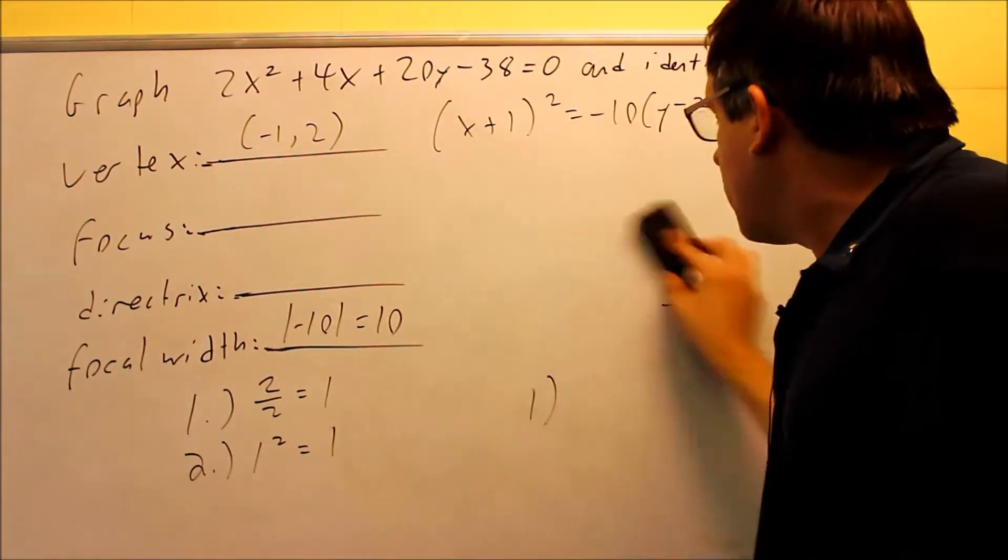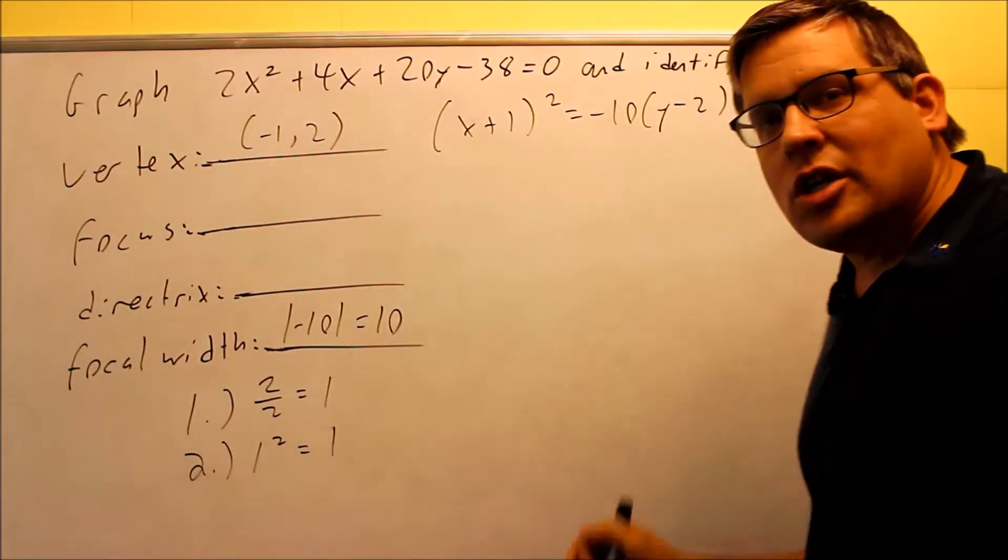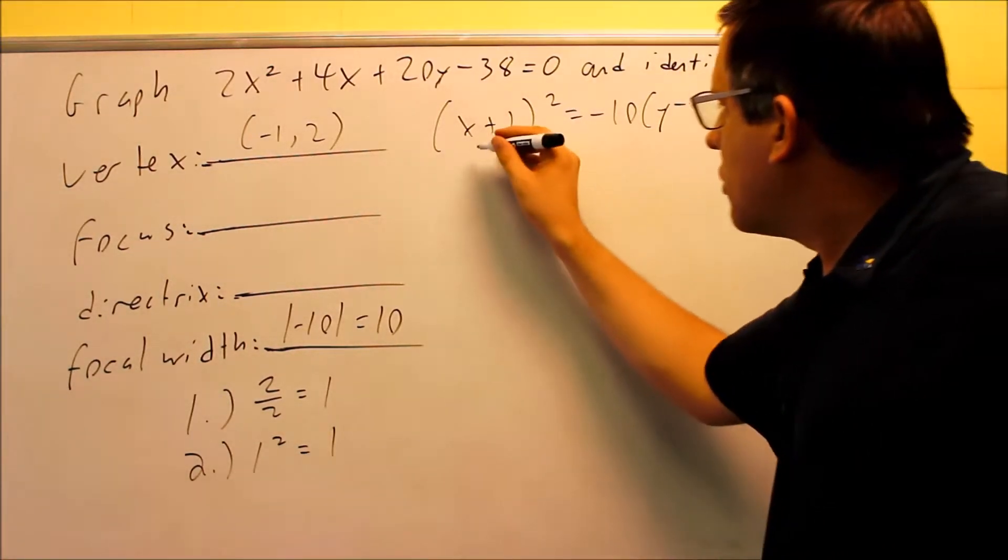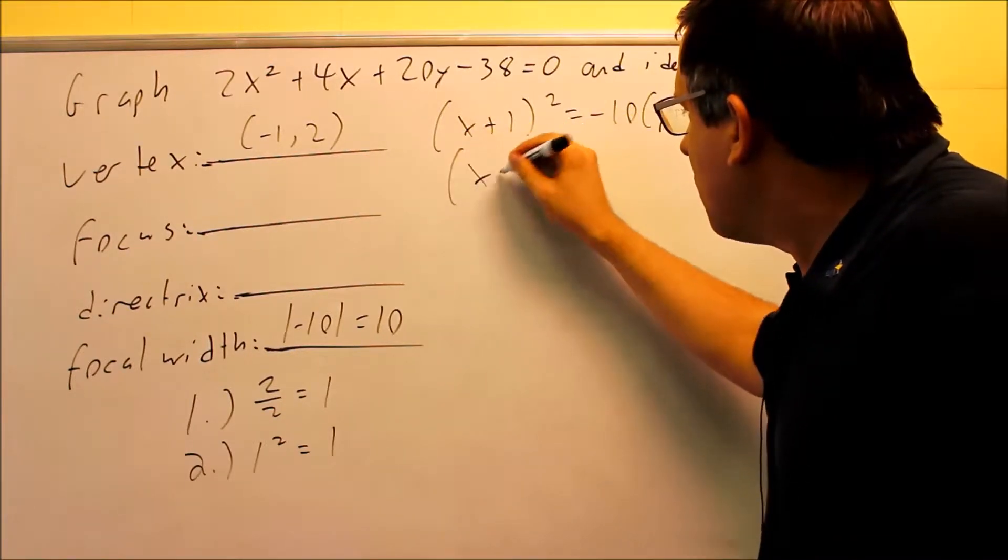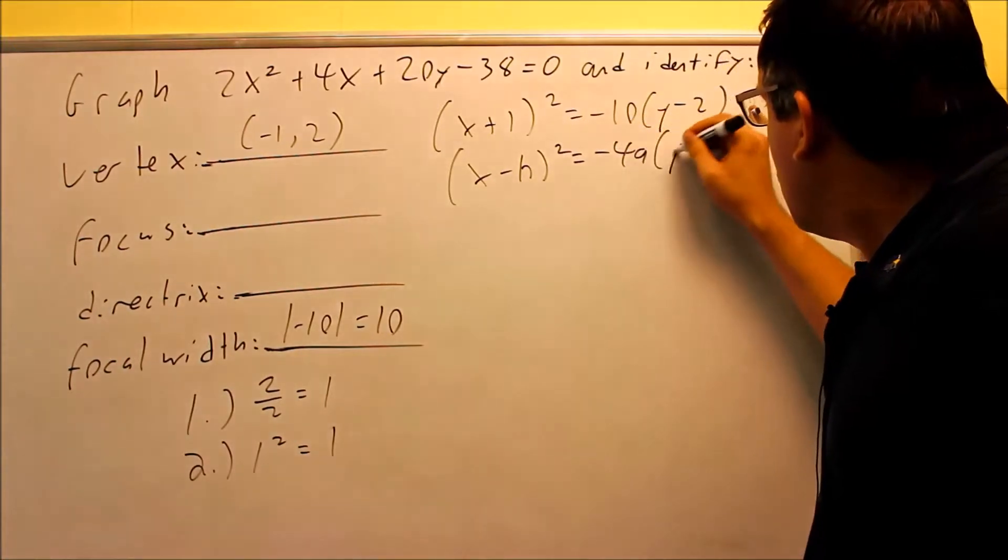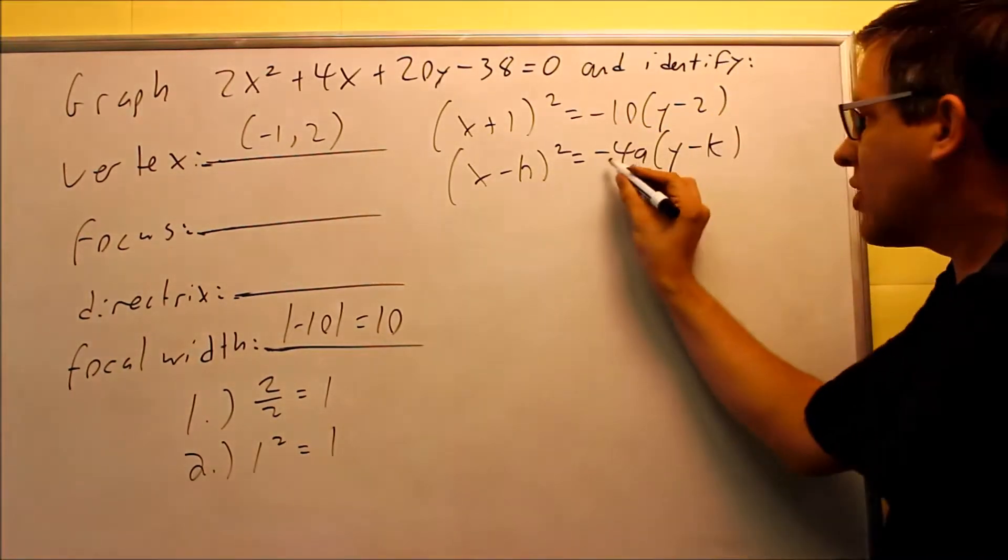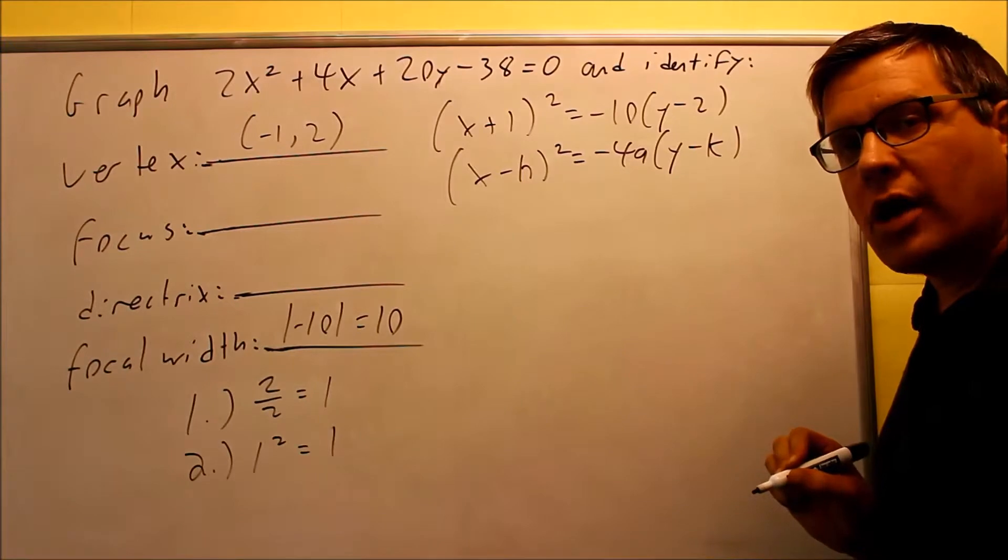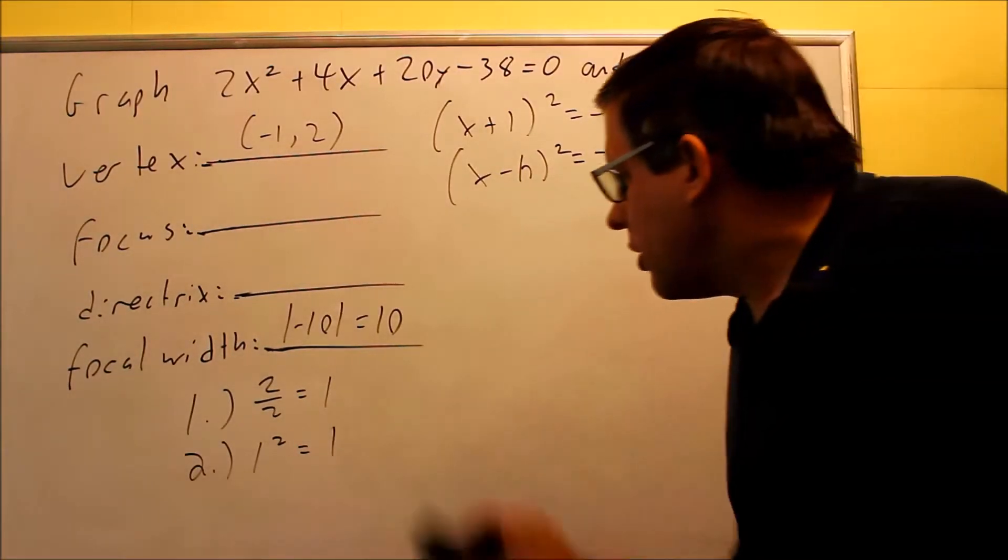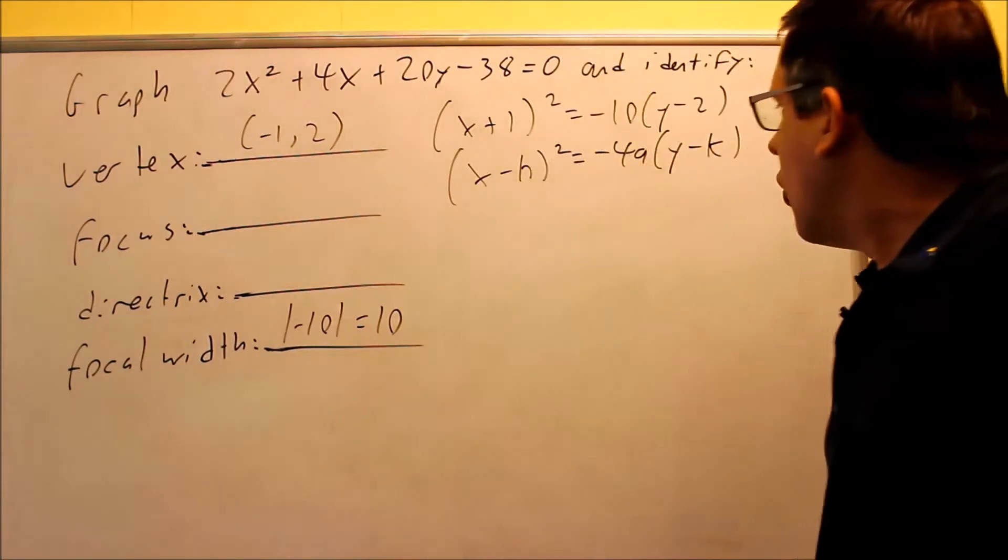So now that we're ready to look at the different models and see which direction this graph is going to open up to. The one that matches, if we look at those four models in the notes, is we have x minus h squared equals negative 4a times y minus k. We're picking the one that has a negative in it because our original formula has a negative in it. So this particular model is one where it's going to open down.